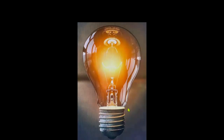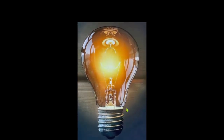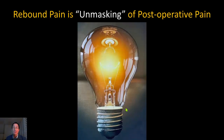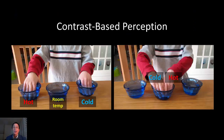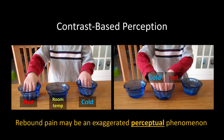So, if rebound pain is not an exaggerated pain stimulus, then what is it? What I believe it represents is an unmasking of postoperative pain in the absence of adequate systemic analgesia. What I hope you just experienced there was a cognitive bias called contrast-based perception. This can also be illustrated by the simple experiment in which you place one hand in a bucket of hot water and another in a bucket of cold water, and then after a time, place both into room temperature water. One will feel hot and the other will feel cold, but note that there is no actual thermal injury happening — rather, there's an exaggerated perceptual response. This mirrors what is happening with rebound pain.